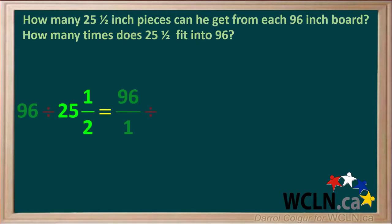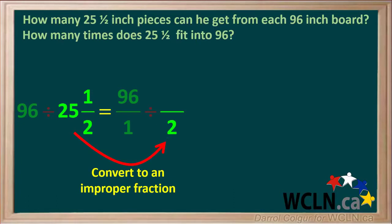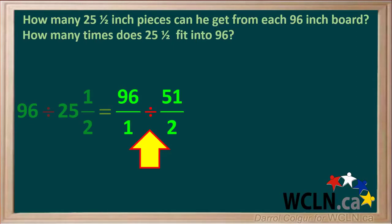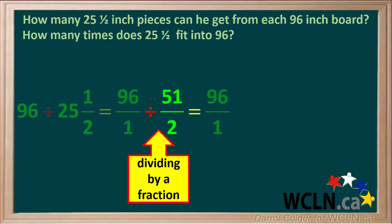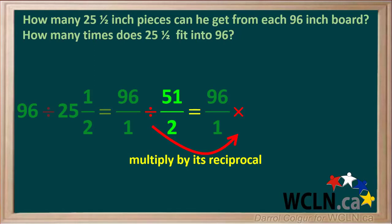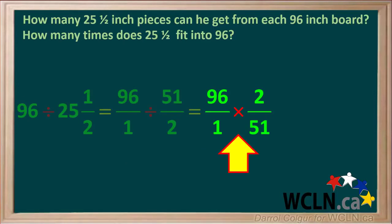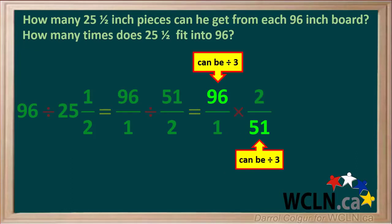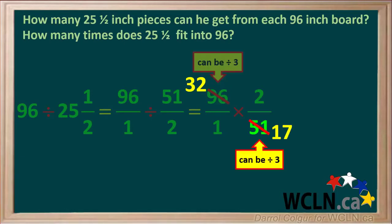96 is the same as 96 over 1. The mixed number 25 and a half needs to be converted to an improper fraction. The denominator is 2, and the numerator is 25 times 2 plus 1, which is 51. So the improper fraction is 51 over 2. Our question is 96 over 1 divided by 51 over 2. Dividing by a fraction is the same as multiplying by its reciprocal, so we multiply by 2 over 51. Notice the diagonals 96 and 51 can both be divided by 3: 96 divided by 3 gives 32, and 51 divided by 3 gives 17.